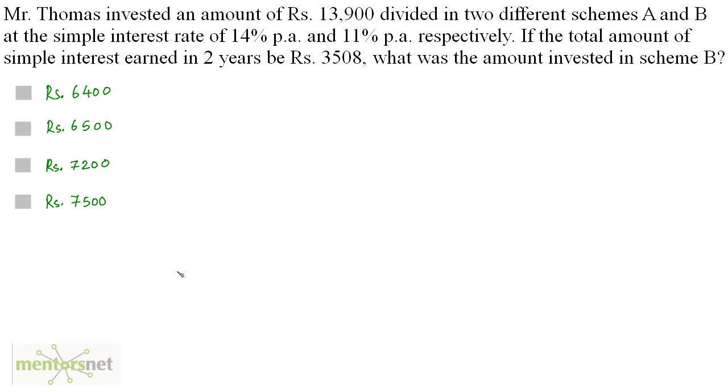Mr. Thomas invested an amount of Rs 13,900 divided in two different schemes A and B at the simple interest of 14% per annum and 11% per annum respectively. If the total amount of the simple interest earned in two years be Rs 3,508. What was the amount invested in scheme B?